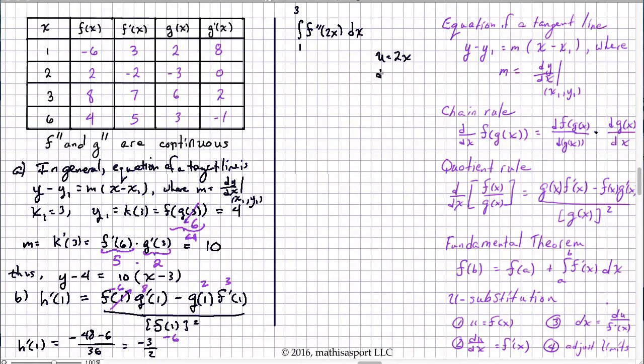So if u equals 2x following the procedure for u-substitution we now calculate du dx which in this case equals 2 and that allows us to rewrite dx as du over 2. It's just a little calculation off to the side. Now we can substitute in for what we're given. We can rewrite this as an integral of f double prime of u and then we'll substitute in for dx as du over 2.